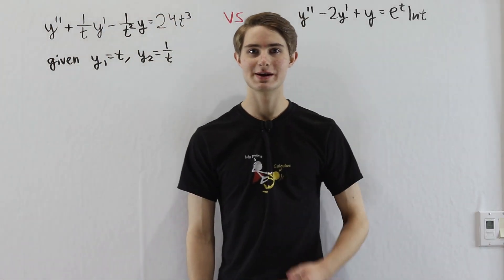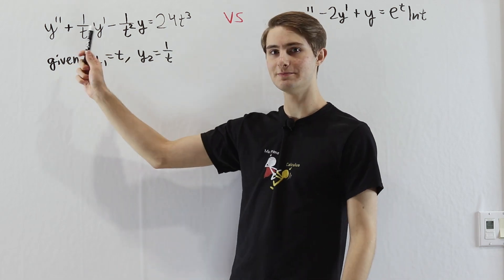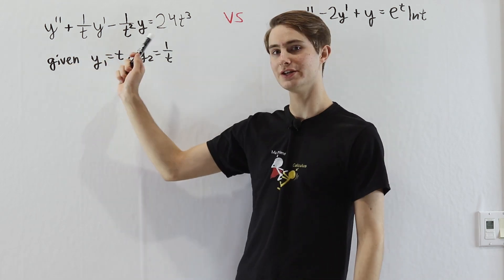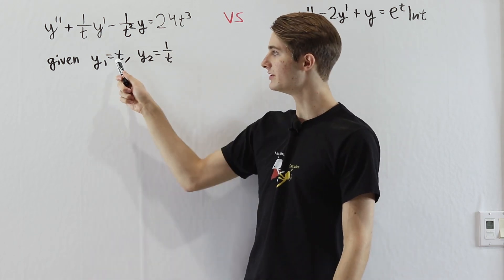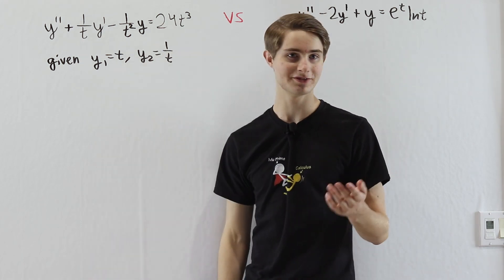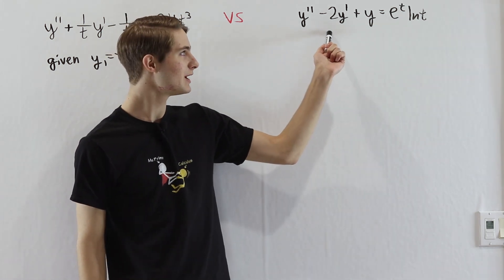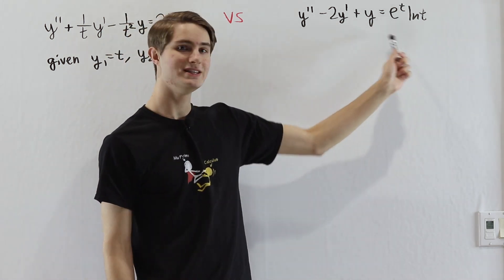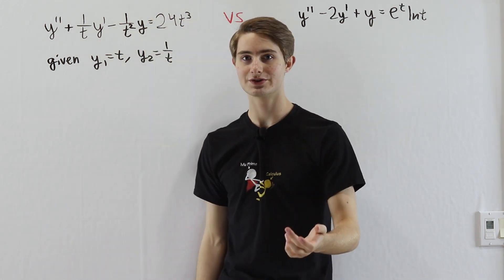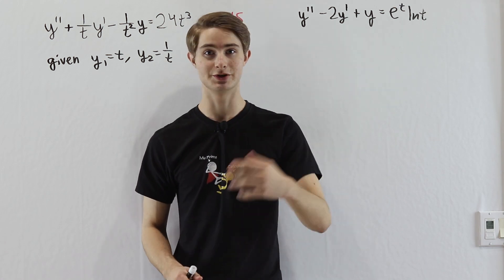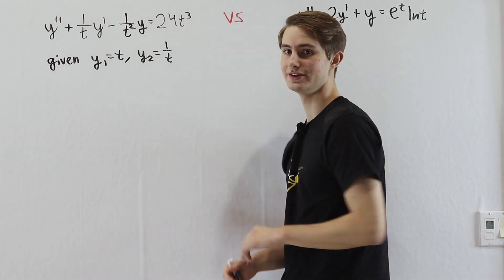We are going to use variation of parameters for this differential equation battle. The first equation is y'' + (1/t)y' - (1/t²)y = 24t³, with complementary solutions already found. The second is y'' - 2y' + y = e^t · ln(t). Both are fairly difficult to solve using other methods, so we'll dive into variation of parameters to figure these out.